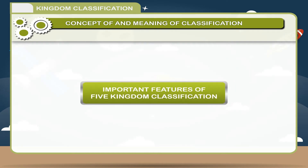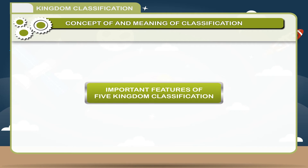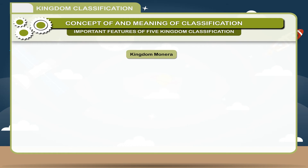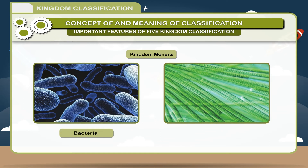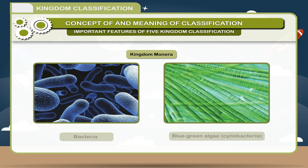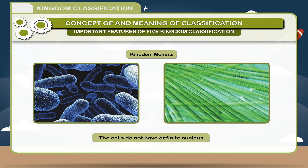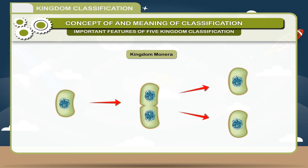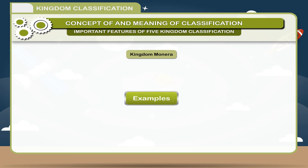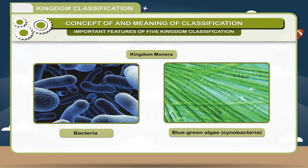Kingdom Monera: This kingdom includes all the microscopic, unicellular, single-celled organisms like bacteria and blue-green algae. The cells do not have a definite nucleus. These are the simplest of all organisms. Monerans are the first life-forms on Earth. They are found everywhere and reproduce by simply dividing into two separate cells. Examples: bacteria, blue-green algae, and cyanobacteria.